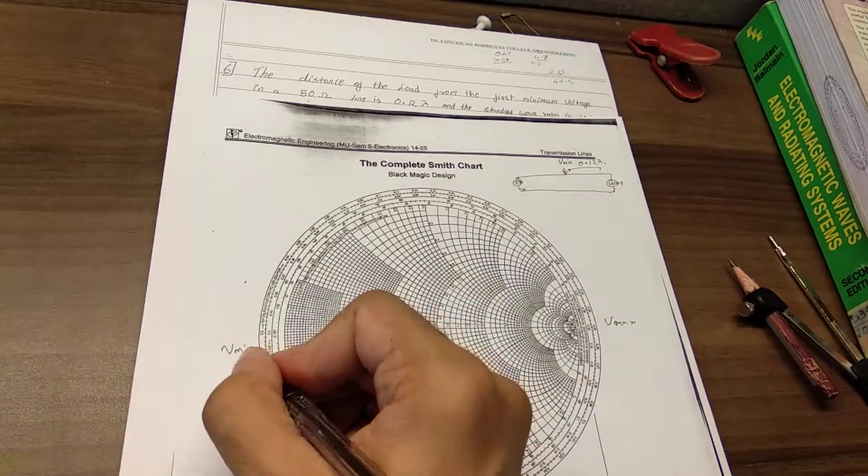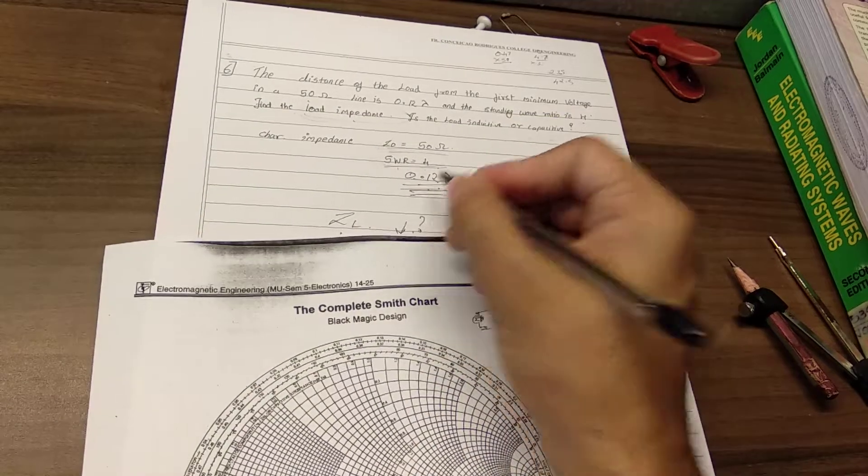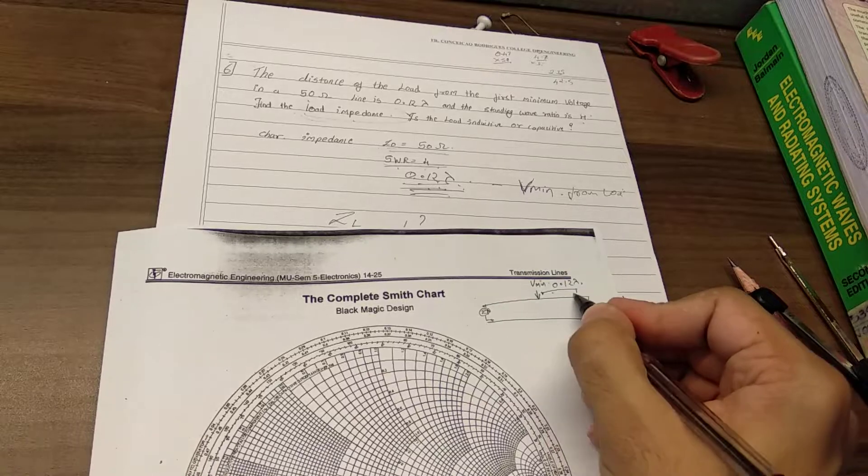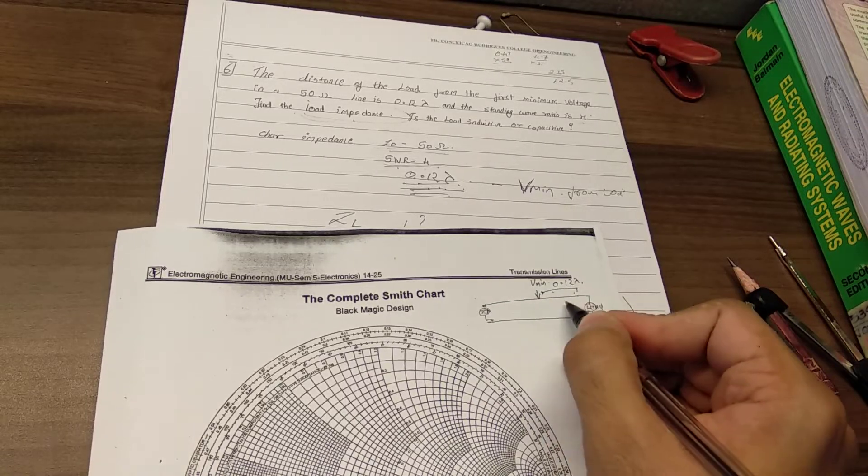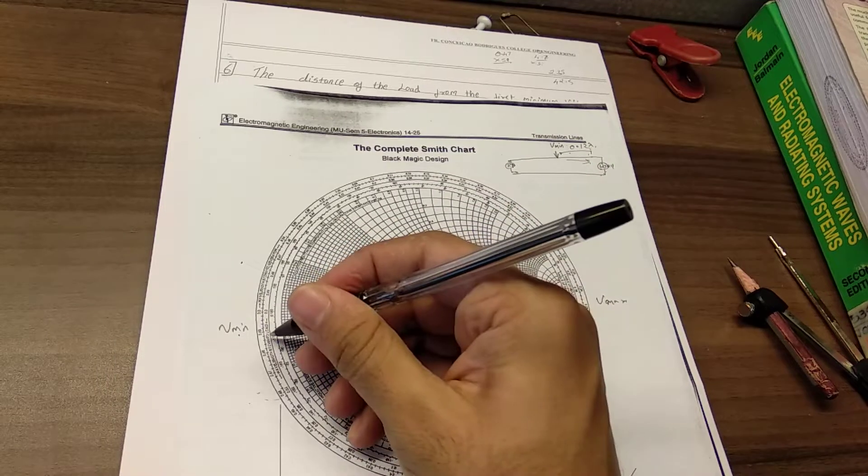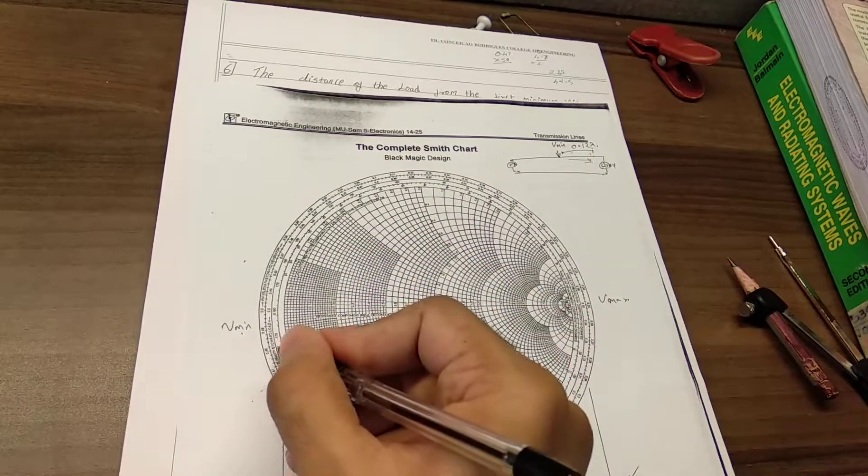So we now know that our load is 0.12 lambda away from Vmin. So if this is my Vmin, from Vmin I have to go towards load 0.12 lambda. So I'm going towards the load.